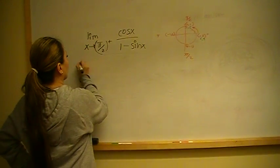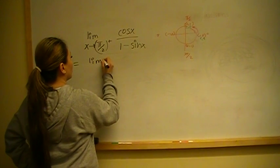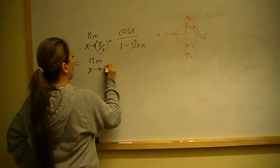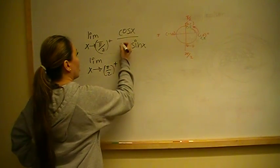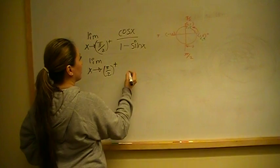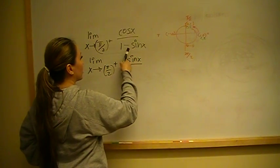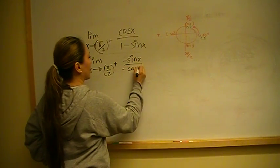So that limit is going to equal the limit of the derivatives, x goes to pi over 2 from the right. Derivative of cosine is negative sine. Derivative of 1 is 0, derivative of sine is cosine. We have negative cosine x.